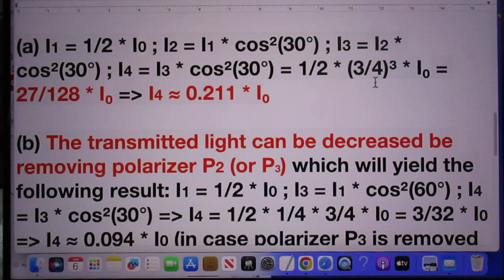Because three times you have to multiply it by the cosine squared of the difference between the angles, and that is every time 30 degrees.